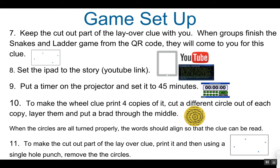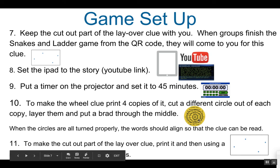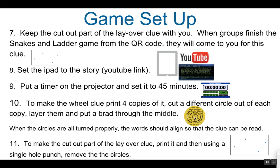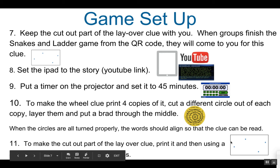I'd like to next go over how to make the cutout for the layover clue and the wheel clue. For the wheel clue, it looks like this but without the circles — you can add the circles and print this four times. Cut each one out on a different circle, then layer them and put a brad through the middle right here. Make sure it's turned so it's not easy to read unless it's all aligned. In order to make the layover cutout clue, you need to print this page and then use a single hole punch to punch out the circles.